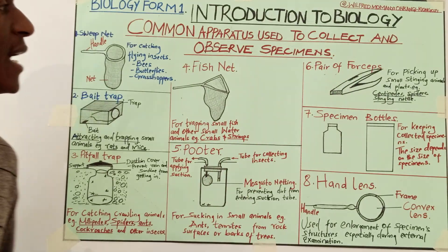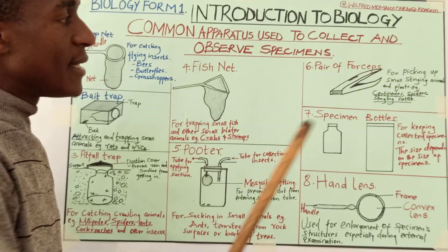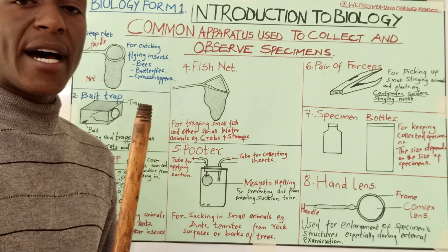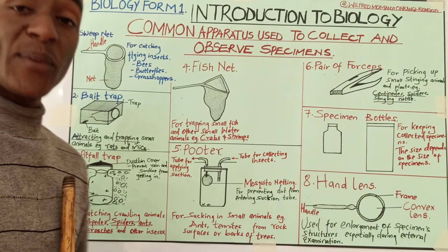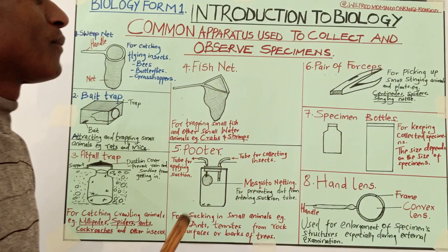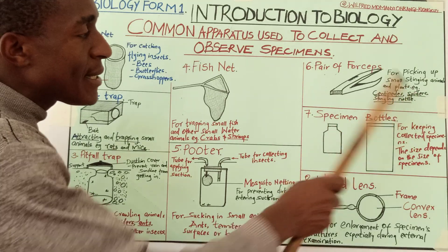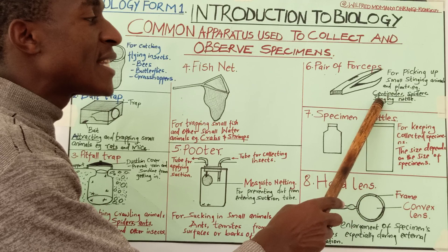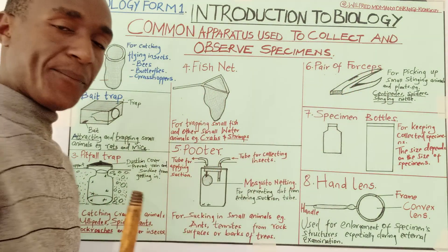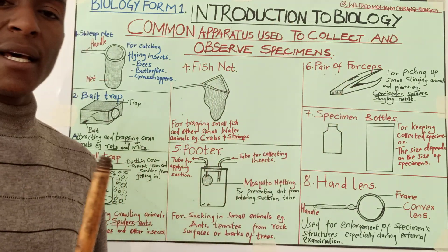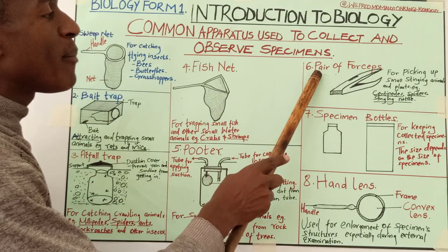Number six is a pair of forceps. This apparatus is not for collection as such, but is used for picking small stinging animals and plants — specimens that can injure or are dangerous. Examples include centipedes, spiders, and stinging nettle, which is a plant. When picking them for examination or study, you must use a pair of forceps. A common mistake is that students say 'forceps' without 'a pair' — you may be penalized. It is correct to say a pair of forceps.